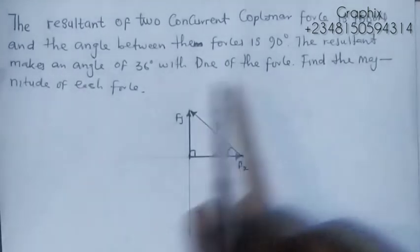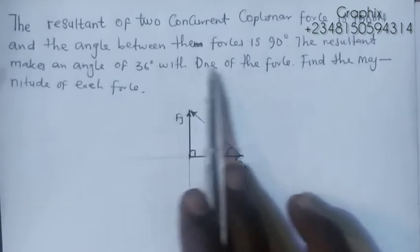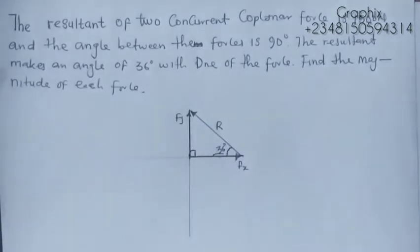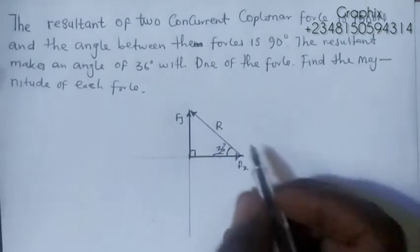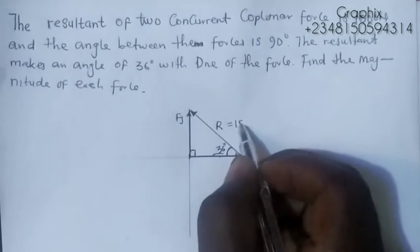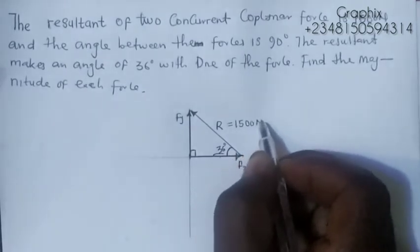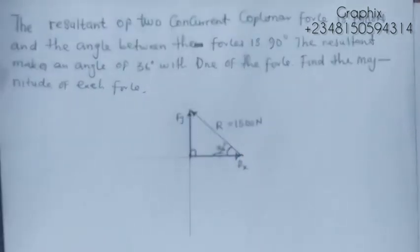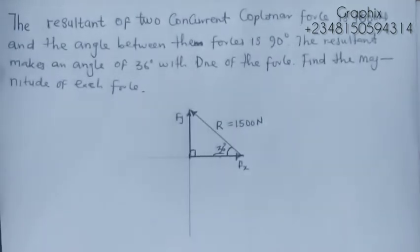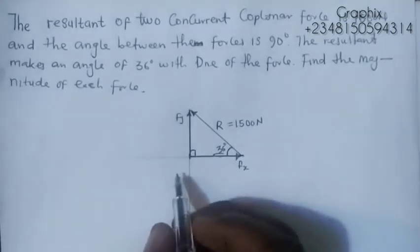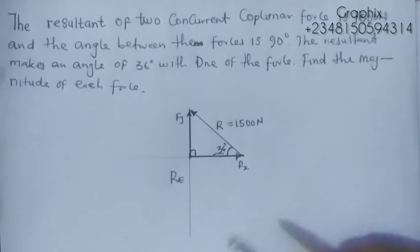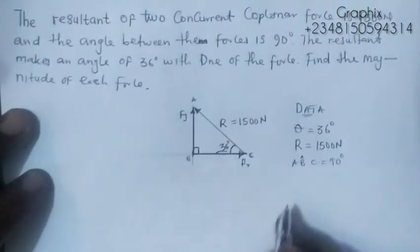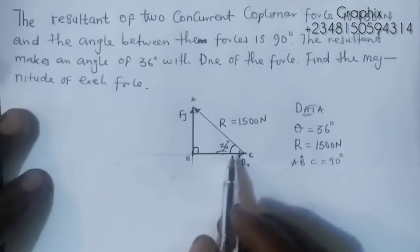We need to find the magnitude of each force: Fx and Fy. We know the resultant force R is 1500 Newton. Let's move forward. Always recall and write your parameters first.